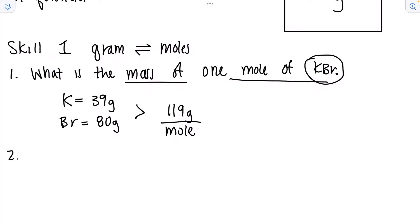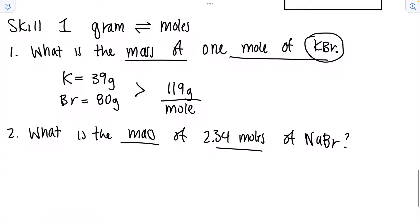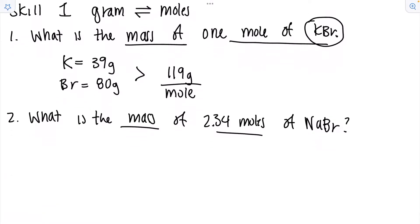Now let's go the other direction. What is the mass of 2.34 moles of sodium bromide? For this we need to set up a proportion and we need the molar mass. So we'll start with our molar mass. The molar mass of sodium is 23 grams and Br is 80 grams. So the total is 103 grams per mole.